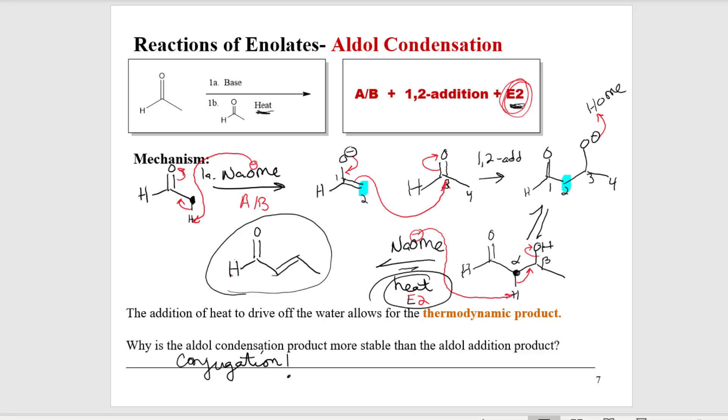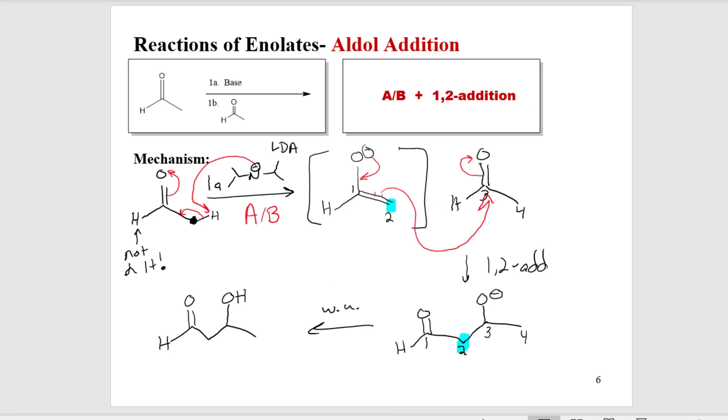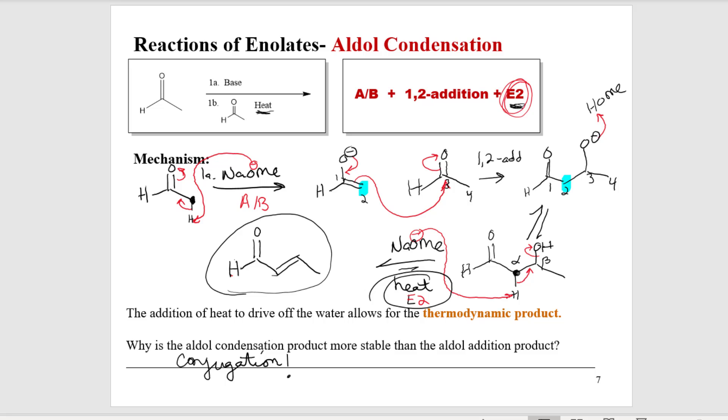So heating this up under the basic conditions prior to workup will actually get you to this system. If you keep the conditions cool and don't have heat and you just kind of throw in your acid at the end, you end up at the aldol addition product, which is actually what a lot of people do because they might want that alcohol there. Either one is attainable, but you can drive it also a little bit further and harder if you heat up the system. Those are the three big reactions for this chapter. Really just introducing a new nucleophile to you, but doing the same SN2 or 1,2 additions and then finally an E2 if you drive it forward with heat.